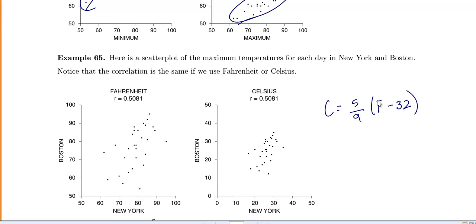So we subtract the same amount from each value and then we times everything by 5 ninths. And because we did the same thing to each x and y value we didn't actually change the correlation.